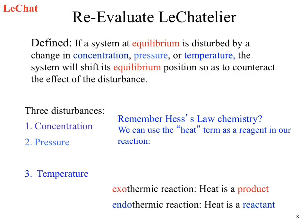If we have an exothermic reaction, we would expect a negative sign on our change in enthalpy, which means heat is a product. That means we go back to our balanced equation, and heat shows up on the product side of our equation. So if we increase the heat on an exothermic reaction, which way does the equilibrium shift?